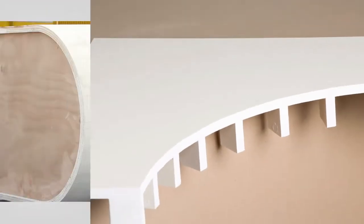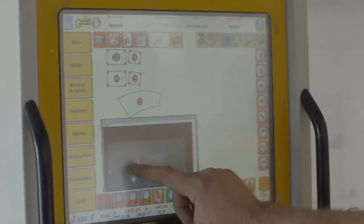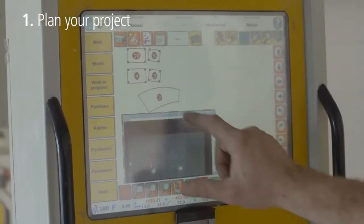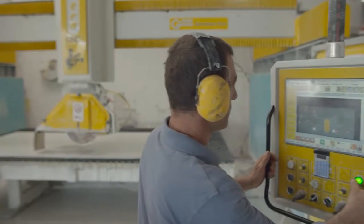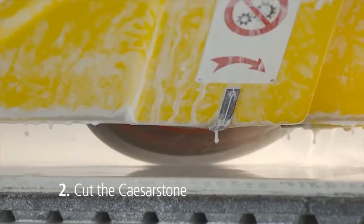For both methods, the preparations are the same. First, you'll need to carefully plan your project. Next, cut the Caesarstone to the dimensions you need.